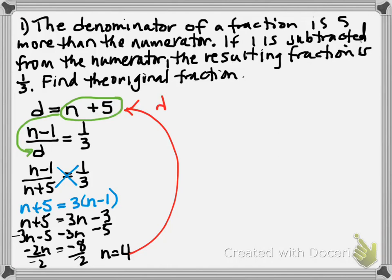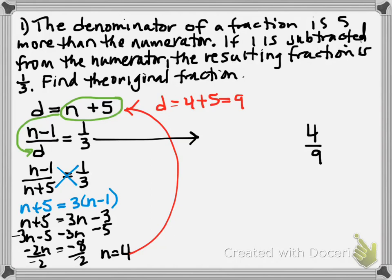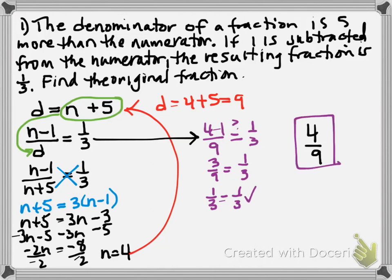Plugging back into the original equation, we get four plus five equals nine for the denominator. So the fraction is four over nine. We can check: if we take one away from four, we get three. Three ninths equals one-third, and three ninths reduces by dividing by three to give one-third equals one-third. That verifies four-ninths is the correct answer.